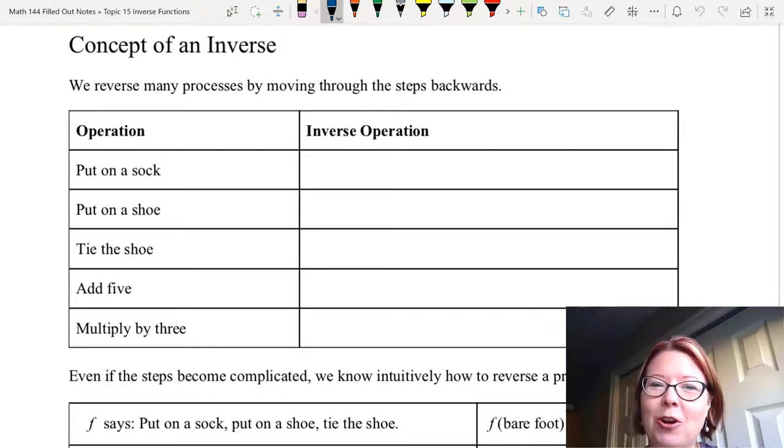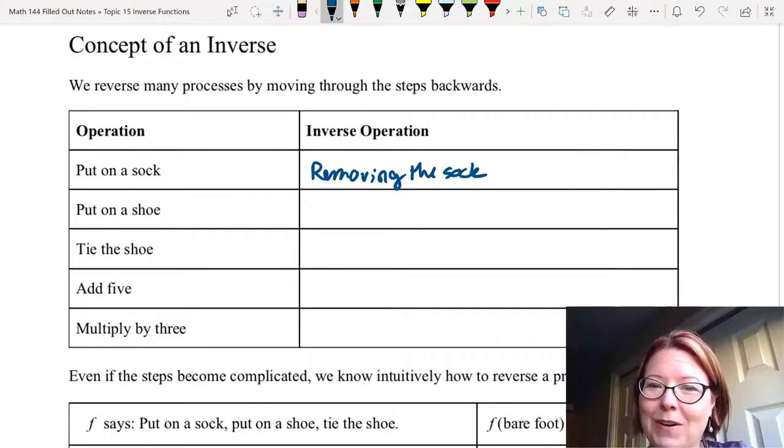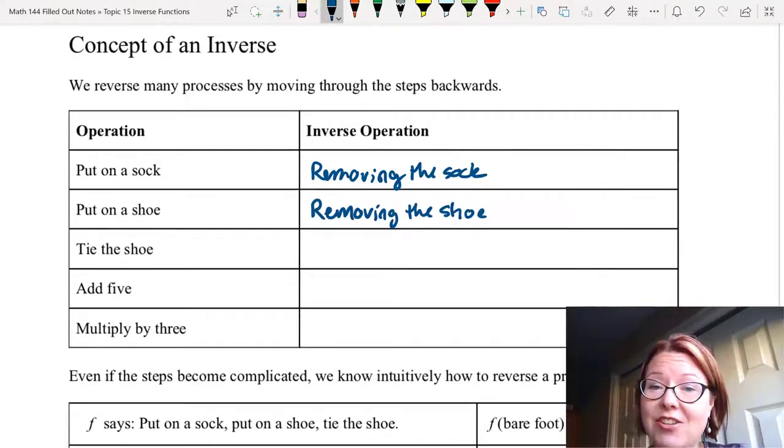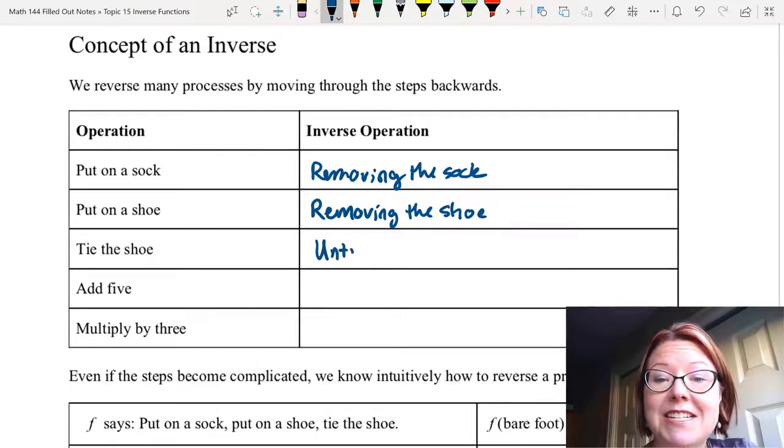For example, if we put on a sock, we can reverse that by removing the sock. If we put on a shoe, we can reverse it by removing the shoe. If we tie the shoe, we can reverse it by untying the shoe.